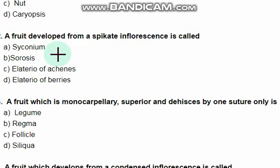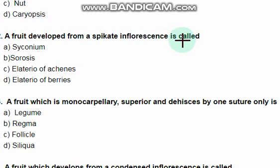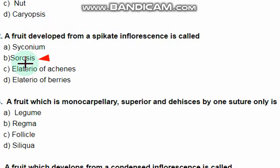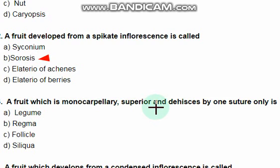A fruit developed from a spicate inflorescence is called — the right option is option B: sorosis. Next question: a fruit which is monocarpellary, superior, and dehisces by one...